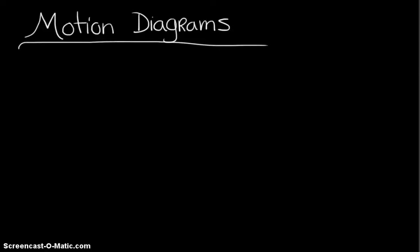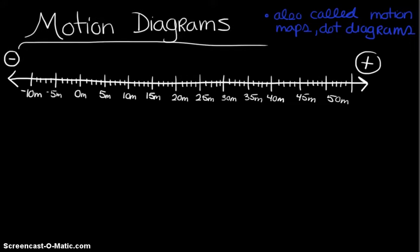Hey everybody, just wanted to give you a basic video about the most simple motion diagrams. A motion diagram is a physical representation that physicists use to describe motion, and today I want to go over the major features of any motion diagram that we make for class. Motion diagrams are also called motion maps, and a simpler version is a dot diagram, but we're going to be using motion diagrams for our class.